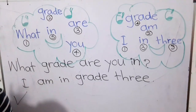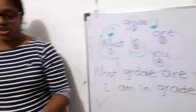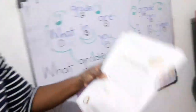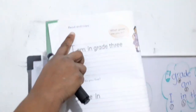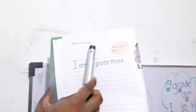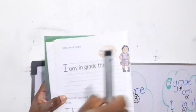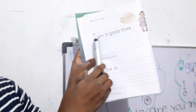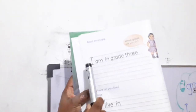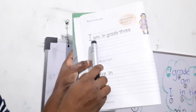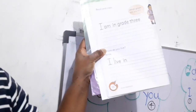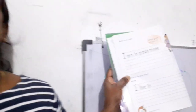Now you have a similar activity in your workbook. Take your workbook and go to page 10. Let's read and copy. You can see the same question: What grade are you in? The answer you have written earlier: I am in grade 3. You can copy it down — there are two lines, you can write two more lines. Do your work nicely. Okay children, goodbye, bye.